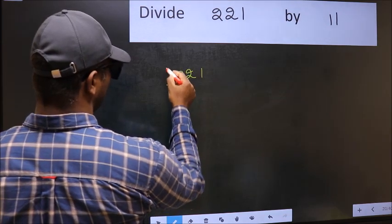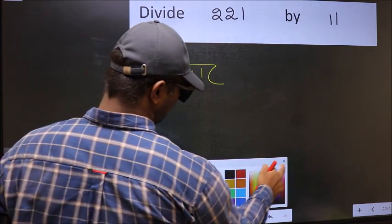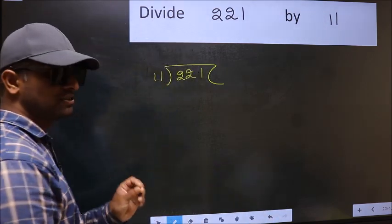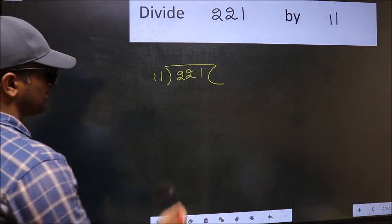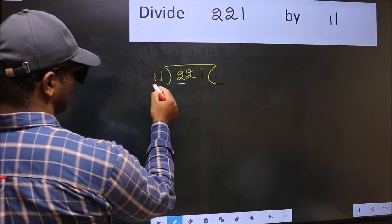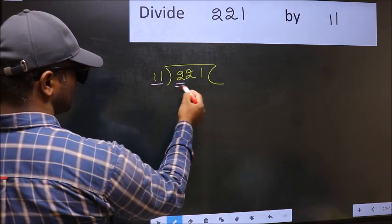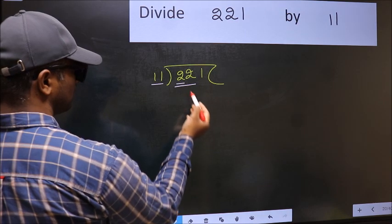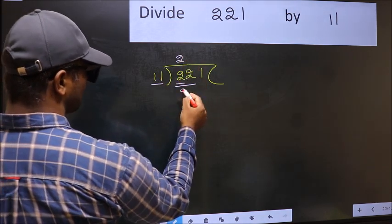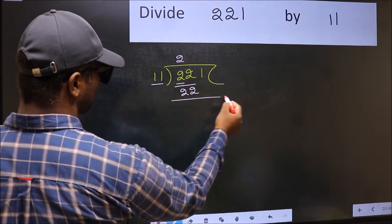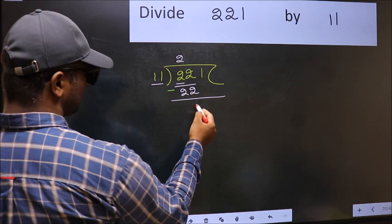221 and 11 here. This is your step 1. Next, here we have 2 and here 11. 2 is smaller than 11. So, we should take 2 numbers, 22. When do we get 22 in 11 table? 11 times 2 is 22. Now, you should subtract. 22 minus 22, 0.